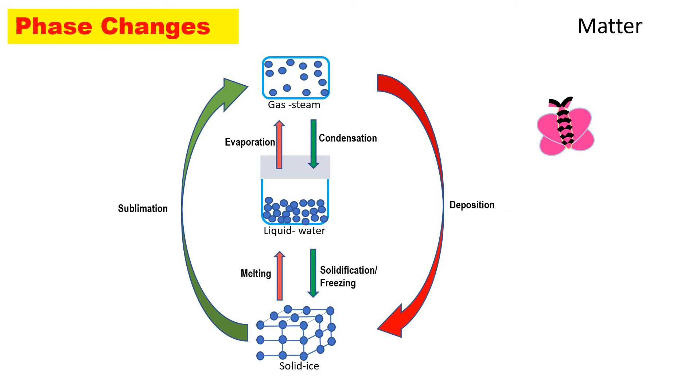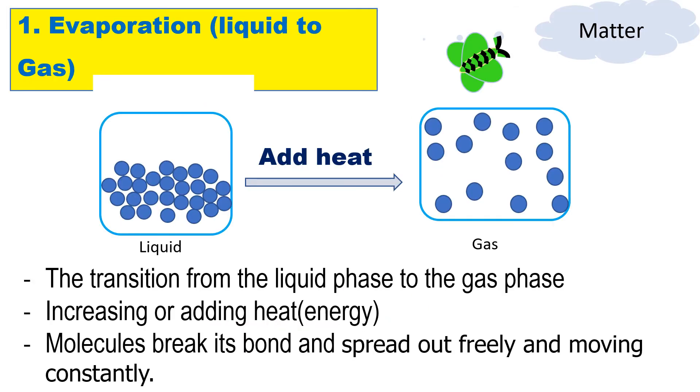The diagram shows six changes: first is evaporation when a liquid turns into gas; condensation when gas turns into liquid; solidification or freezing if liquid turns into solid; deposition when gas turns into solid; and sublimation when solid changes into gas. Let's start with number one phase change.